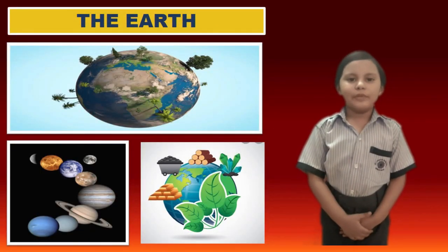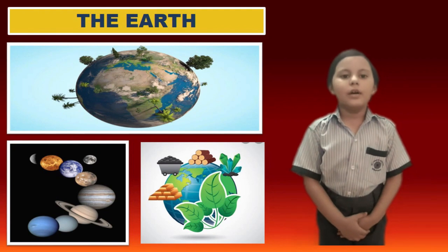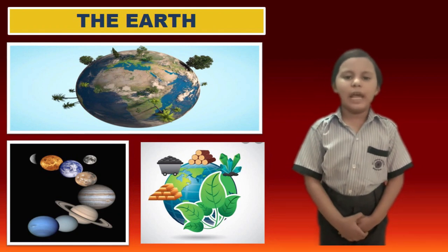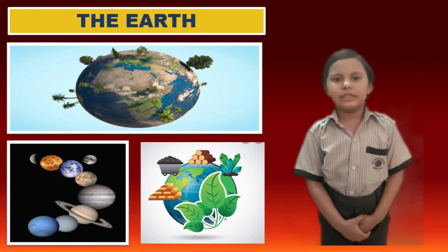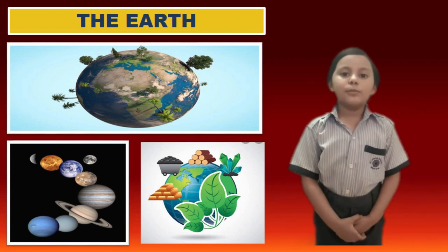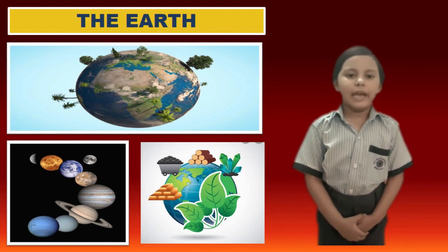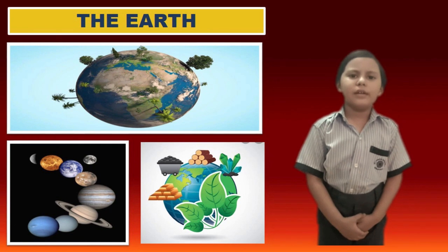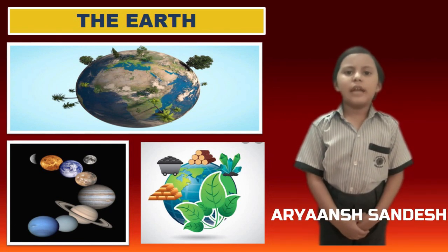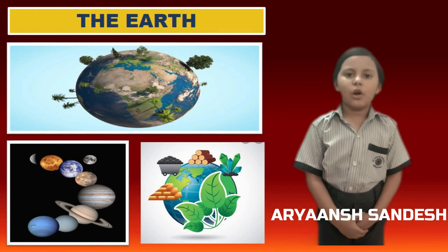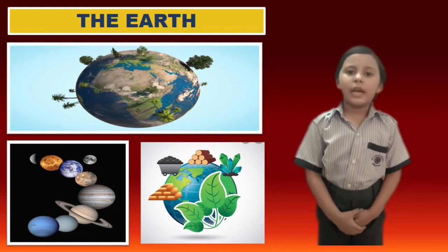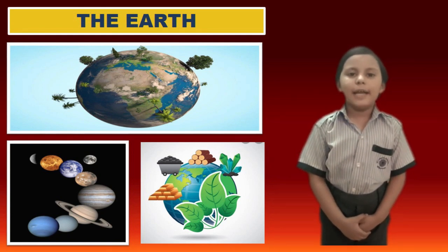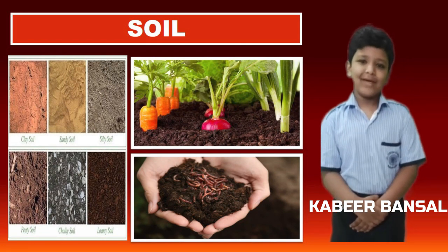Out of the eight planets of our solar system, only our planet Earth has life in it. Earth provides air, food and water to sustain life. The beauty of our planet lies in the fact that it is home to a large variety of plants and animals. For these reasons, it is also called a unique planet. Our Earth also contains natural sources like soil, minerals, fossil fuels, forest and wildlife, which my friends will discuss one by one.